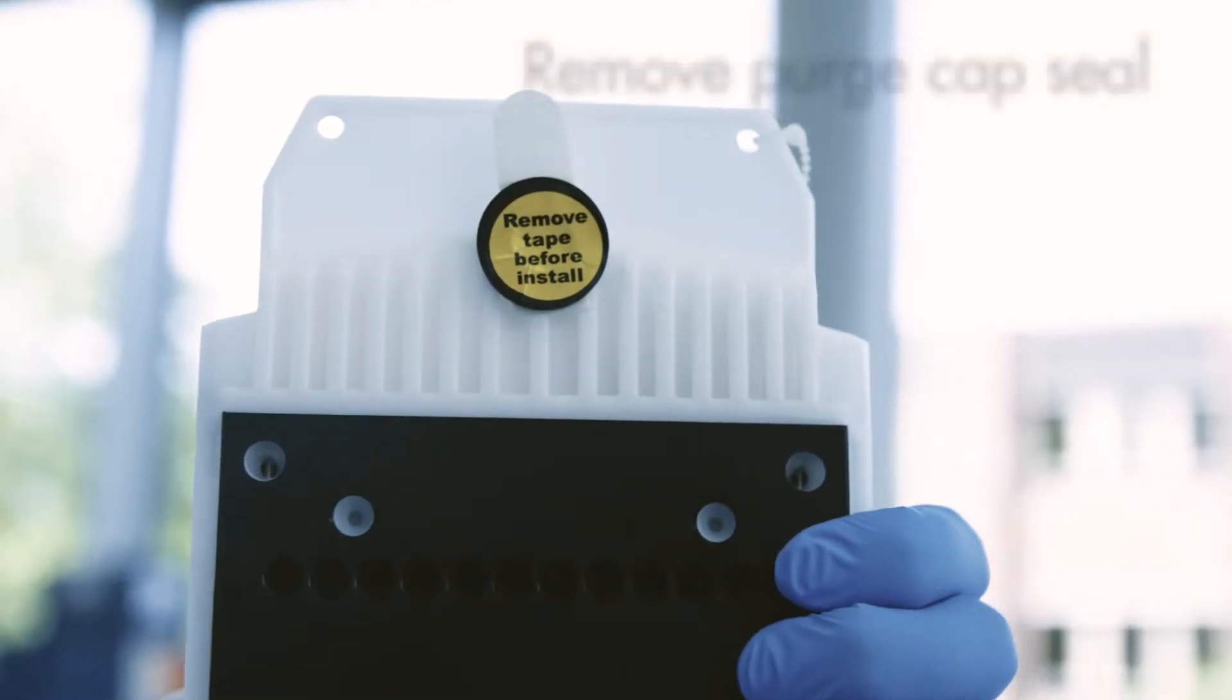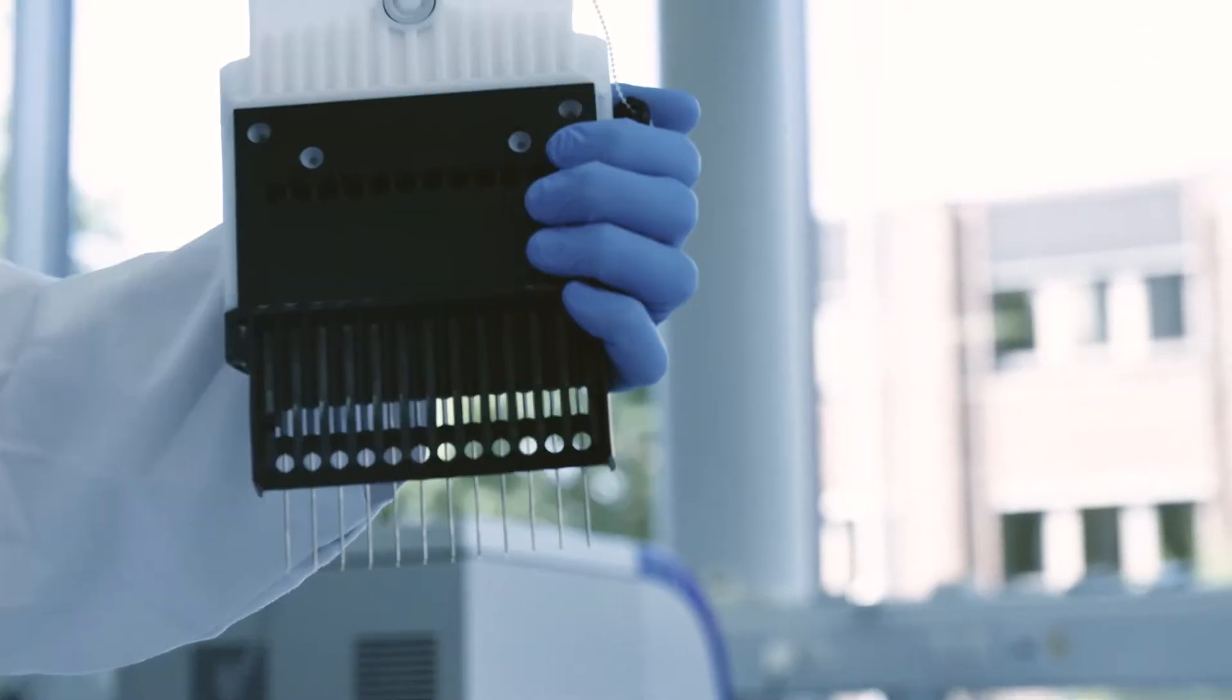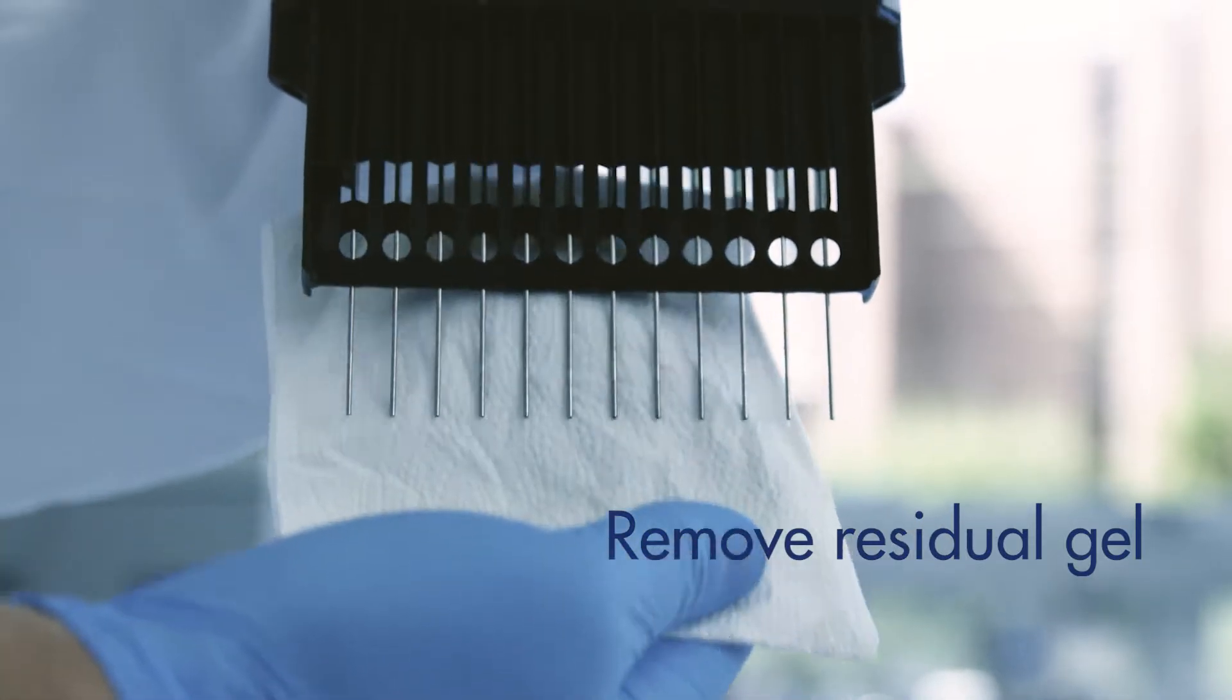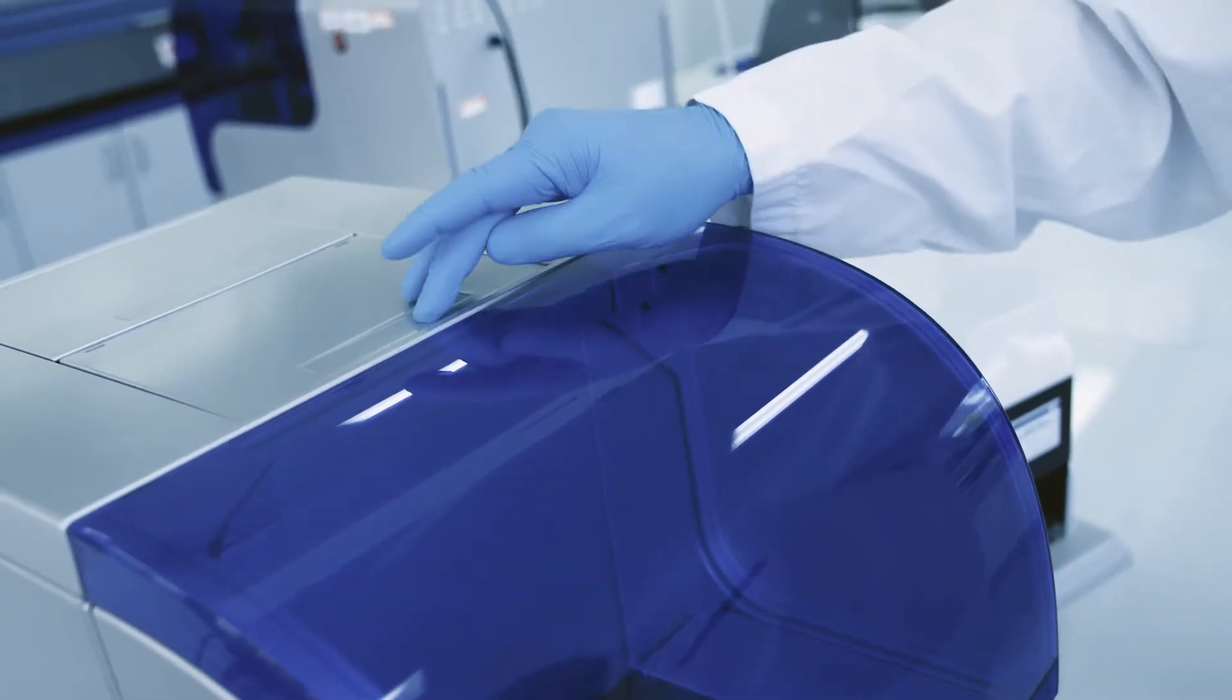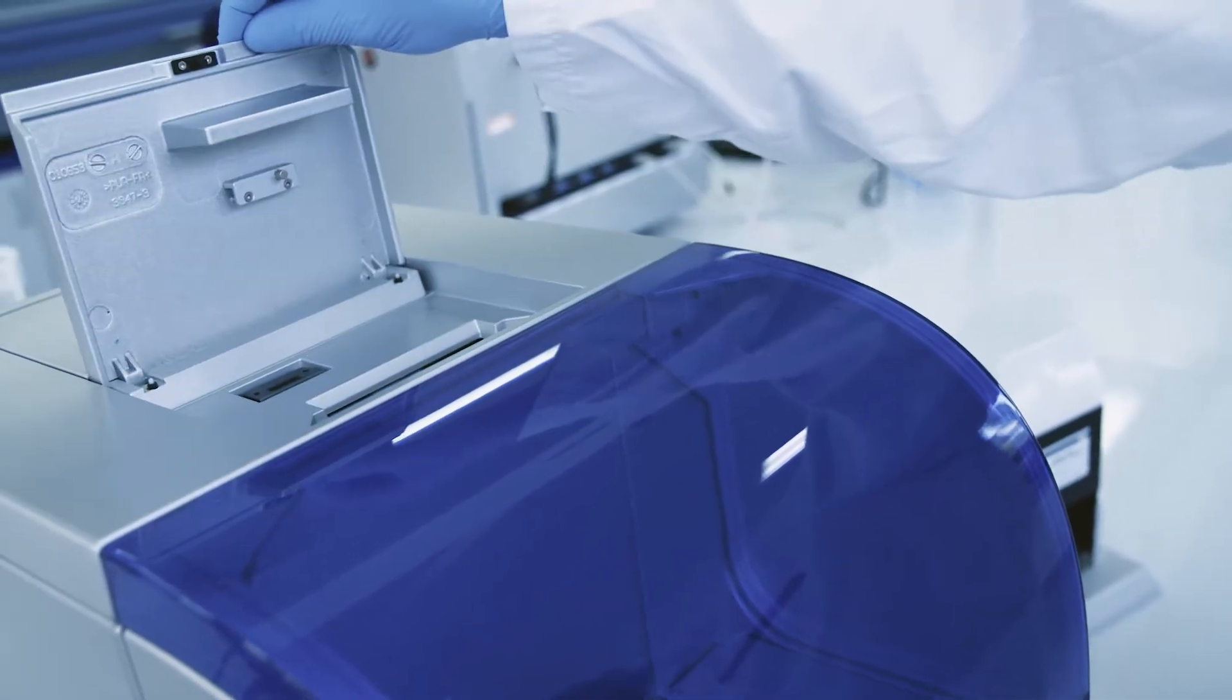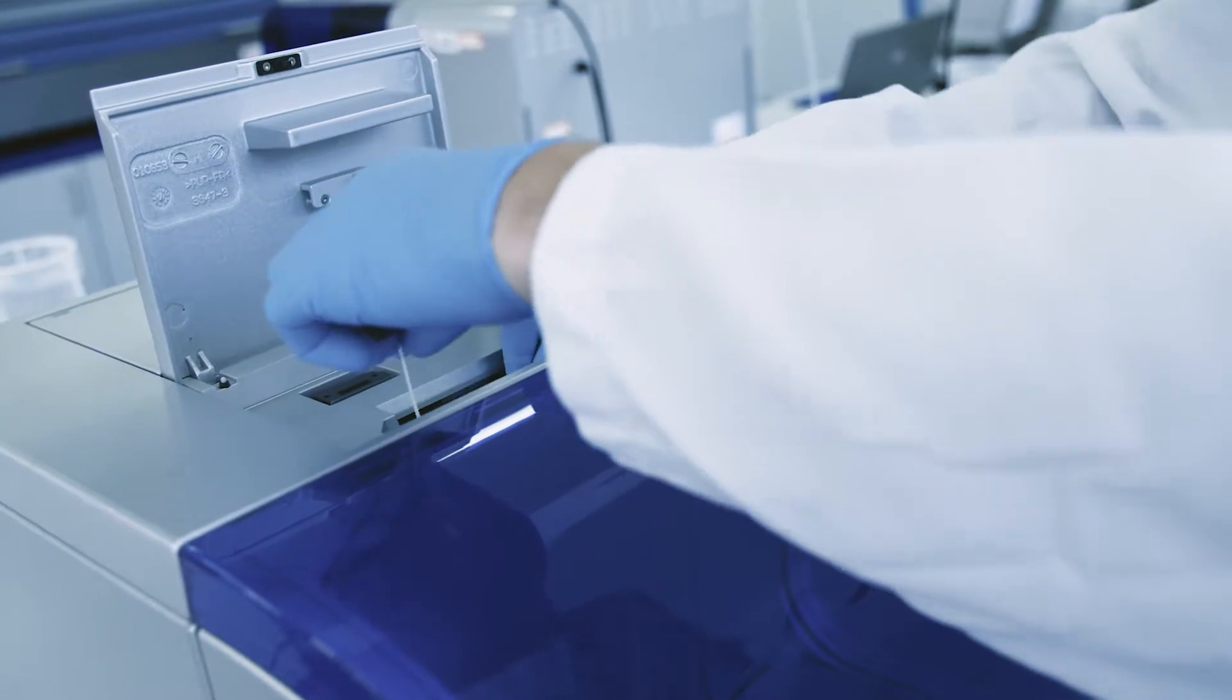Before inserting the cartridge into the QIAXcel Advanced, ensure the purge cap seal is removed. In addition, remove any residual gel or liquids from the capillaries and the purge port. To insert the cartridge, the cartridge door needs to be opened. Insert the cartridge with the description label facing toward the front of the QIAXcel Advanced.